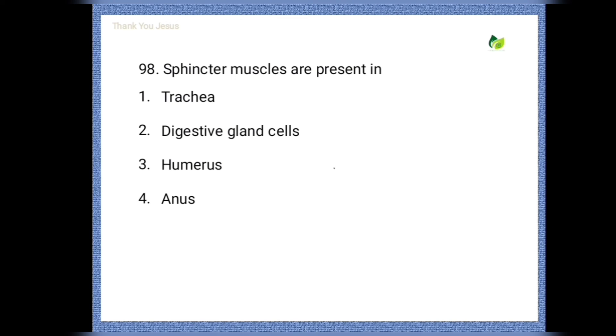Next question: sphincter muscles are present in which of the following options? Options are: trachea, digestive gland cells, humerus, anus. The correct option is anus.